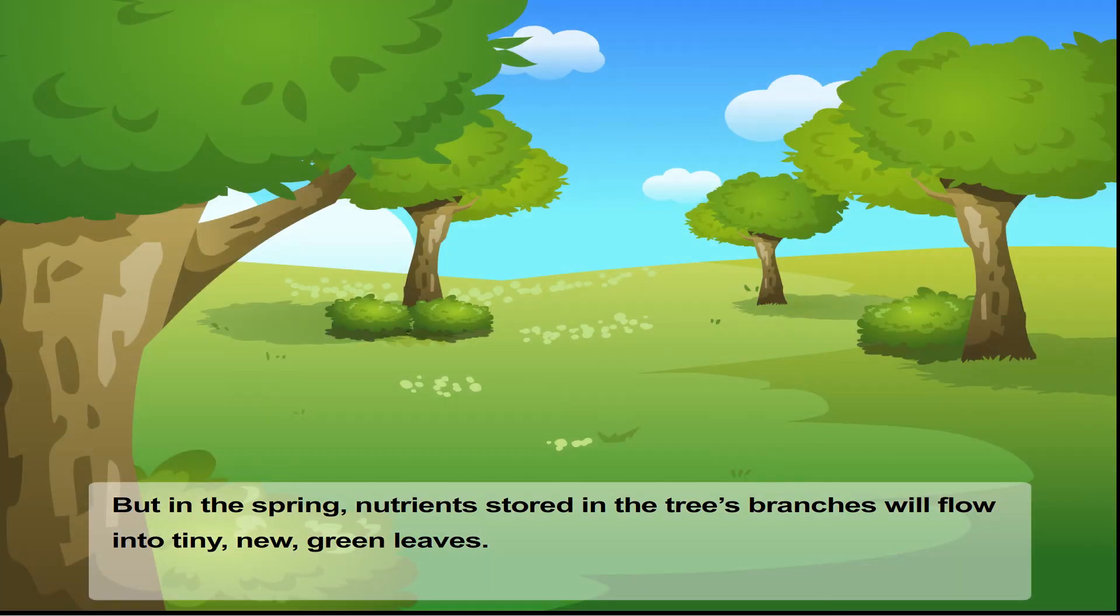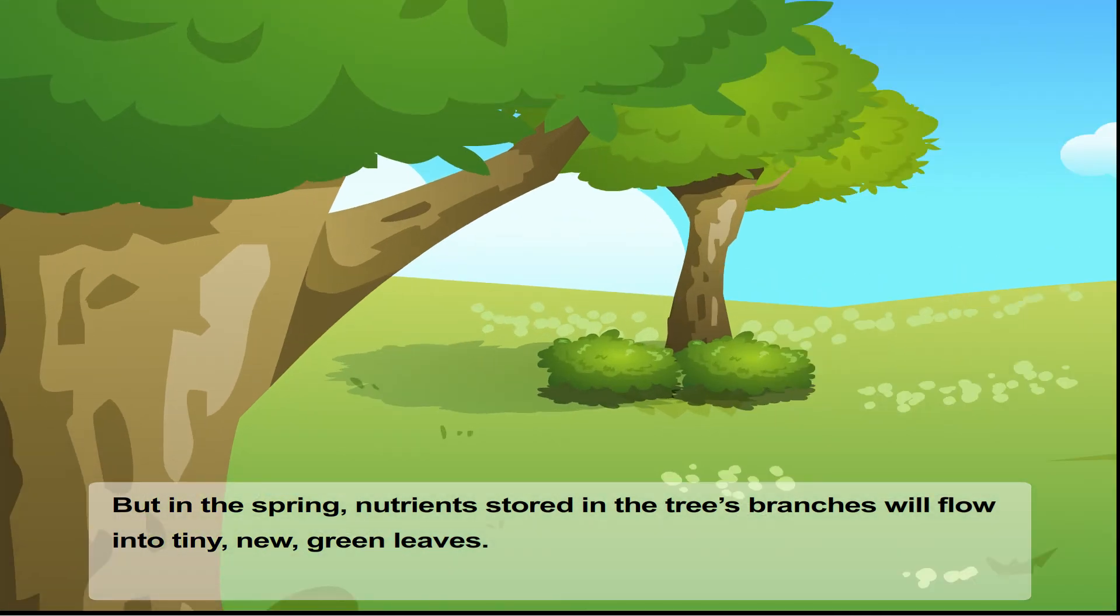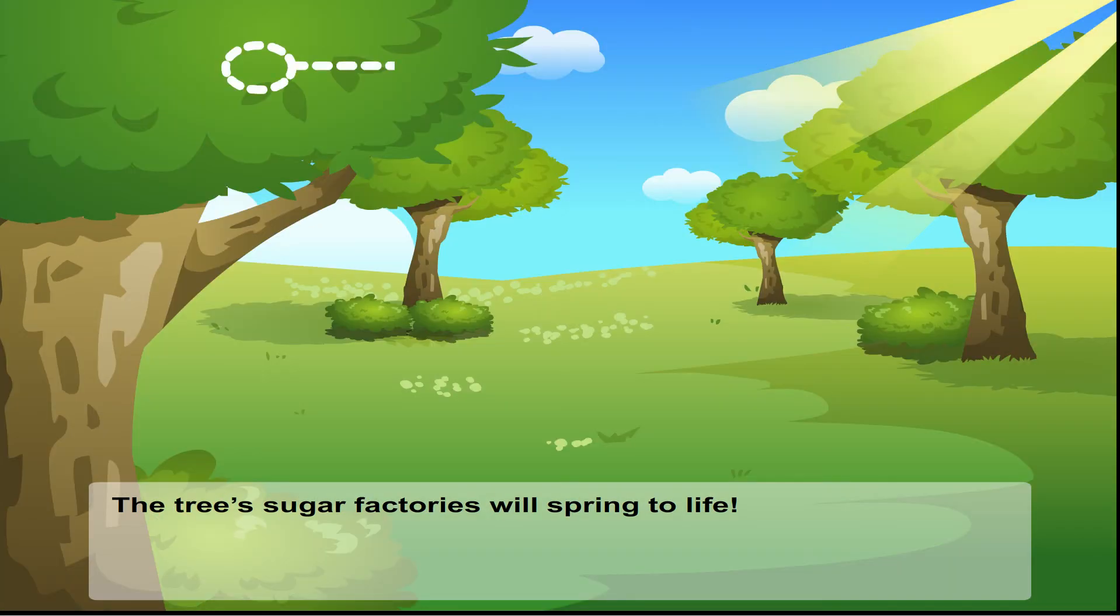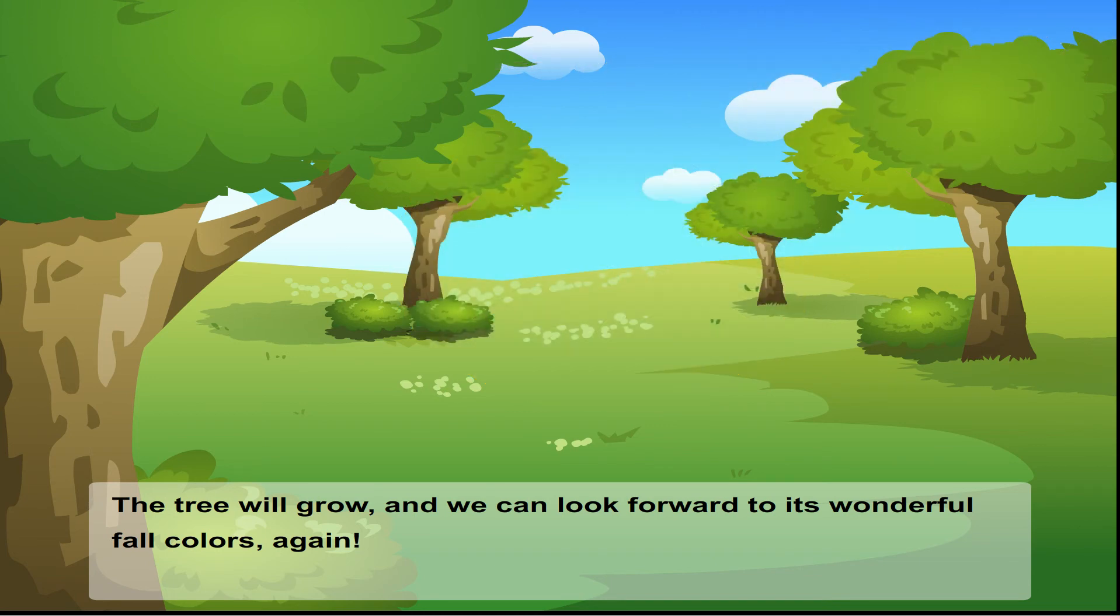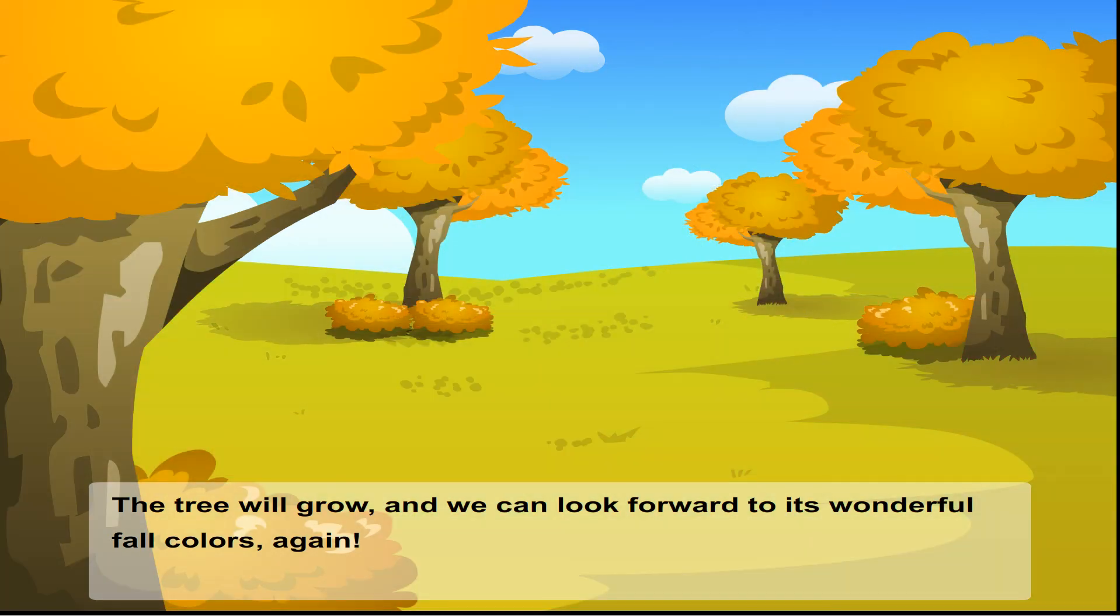But in the spring, nutrients stored in the tree's branches will flow into tiny new green leaves. The tree's sugar factories will spring to life. The tree will grow and we can look forward to its wonderful fall colors again.